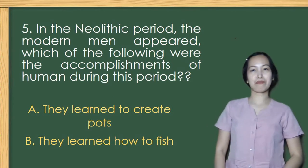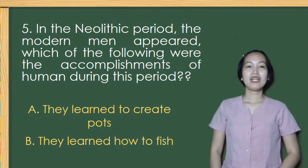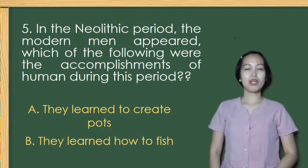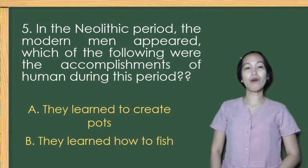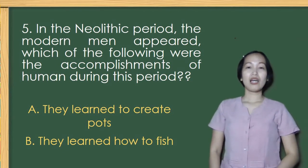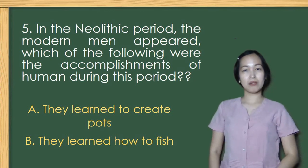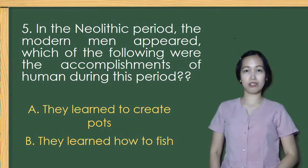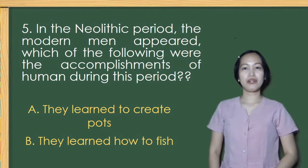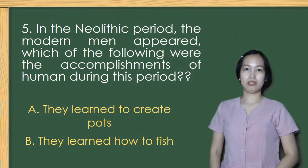Number 5: In the Neolithic period, the modern men appeared. Which of the following were the accomplishments of humans during this period? A: They learned to create pots, or B: They learned how to fish? Yes, letter A is the correct answer — they learned to create pots.